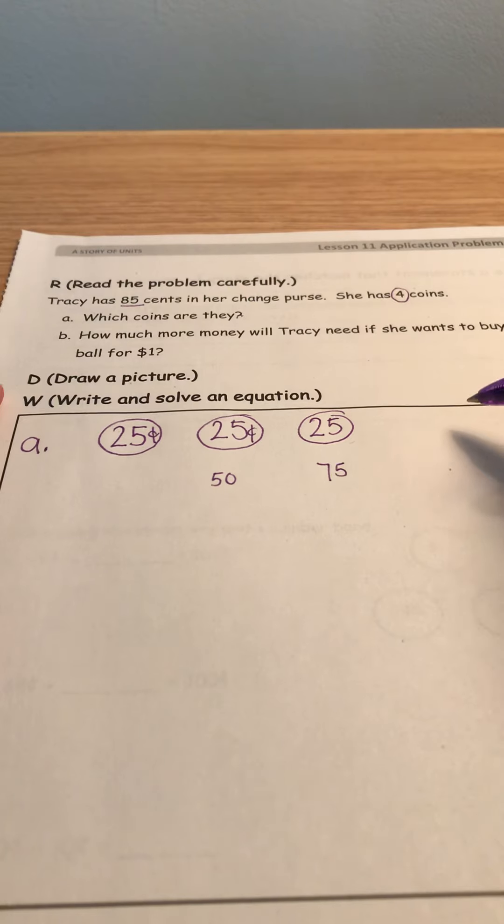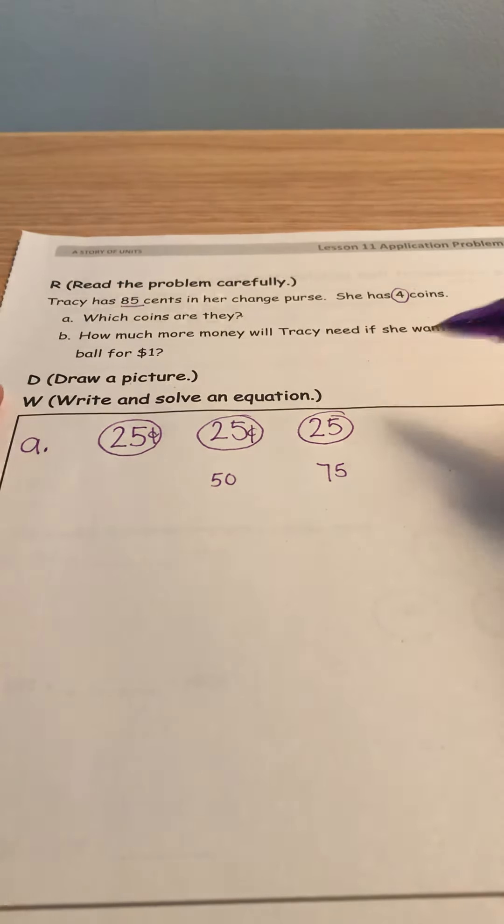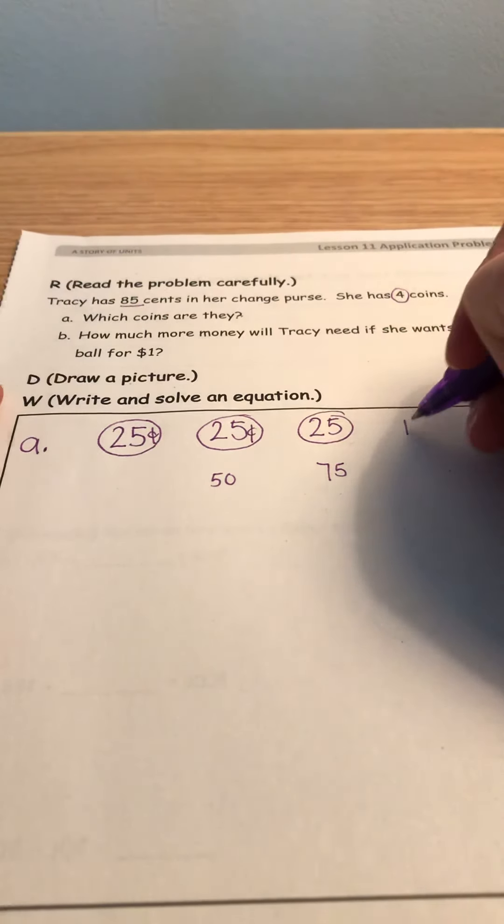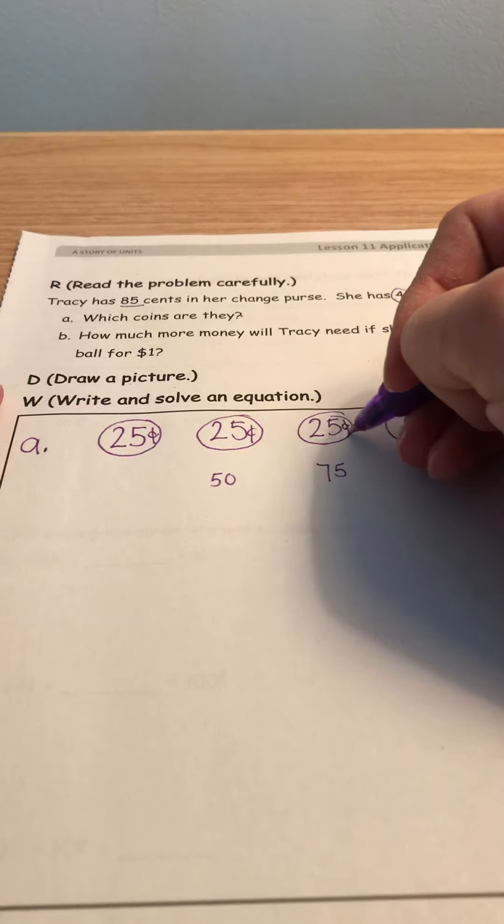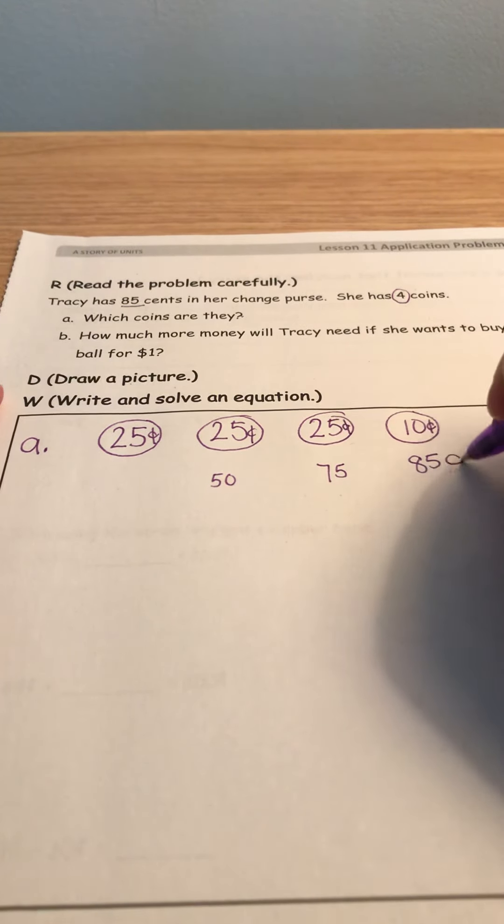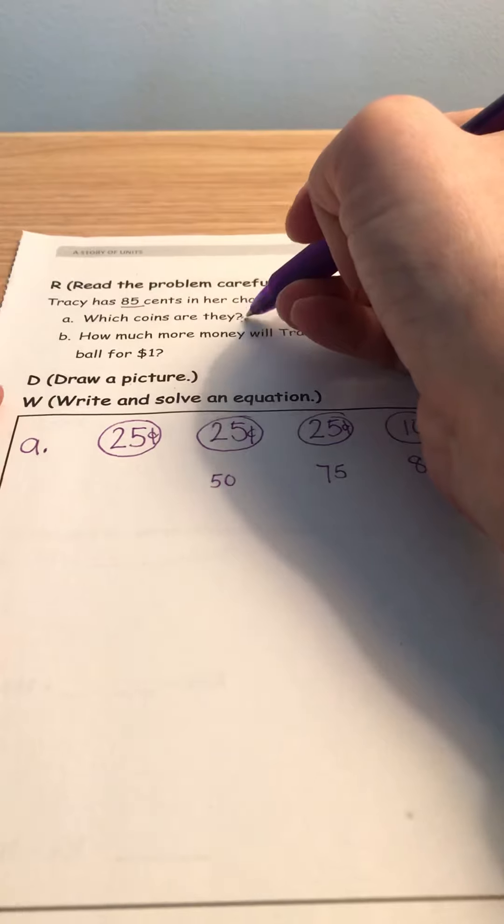Now I only have one more coin left. What can I add to 75 to give me 85? That's right, a dime. If I add a dime, I'll now have 85 cents. So which coins are they?